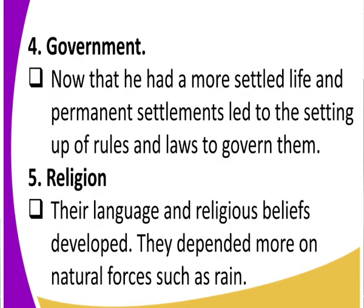Regarding government, there were rules and laws to be followed. As man settled and ventured more into agriculture, there was enough food. When there is enough food, population increases, and when population increases, people need laws and rules to govern them. That is why they started a government — because they now had a more settled life with permanent settlements.